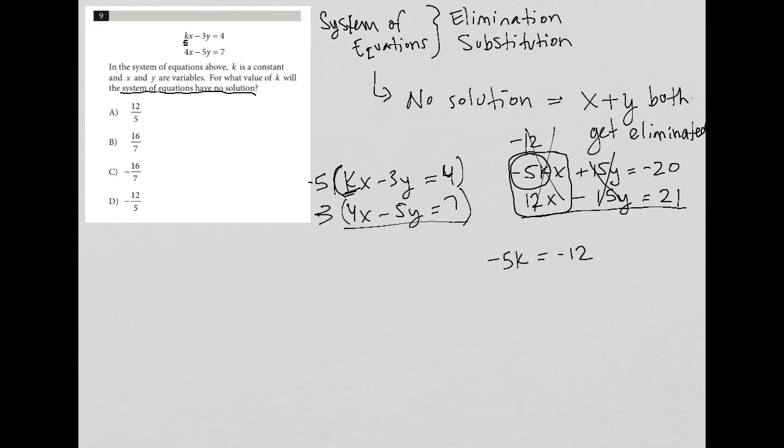So, let's simplify this. In order for negative 5k to equal negative 12, I can divide by negative 5 on both sides, k would need to equal positive 12 fifths.